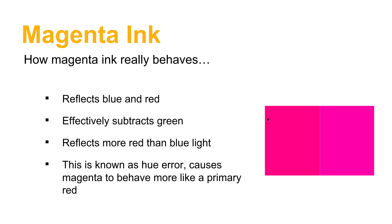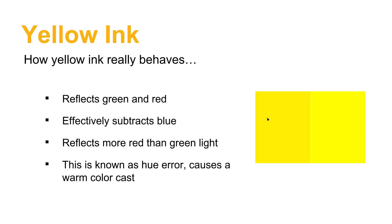Magenta has a similar deficiency — it effectively subtracts out the green, but it reflects a little more red than blue light, which causes a hue shift giving a slightly more red color cast than a true magenta. Yellow has the same problem: it subtracts out the blue really well, but lets a little too much red through, so process yellow is a little bit warmer than a pure yellow should be.